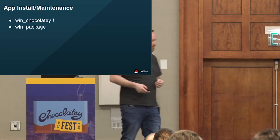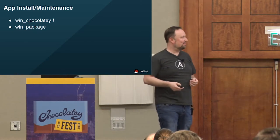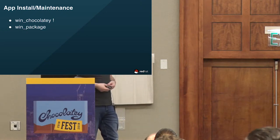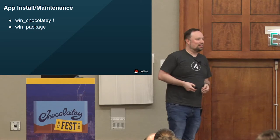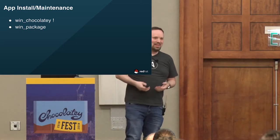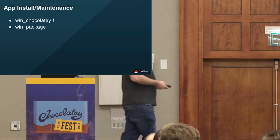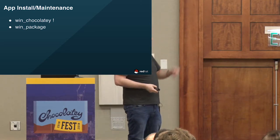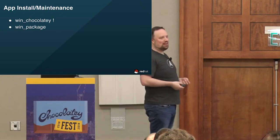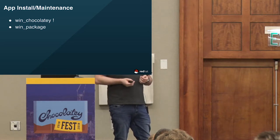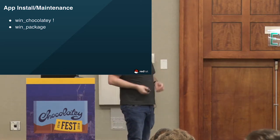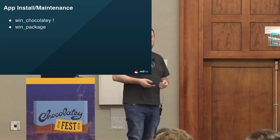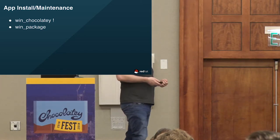The next pain point is app installation and maintenance. win_chocolatey is the Ansible module that takes care of that and gives you that package management experience on Windows. If you need idempotent system management, you really need a package manager. In cases where win_chocolatey doesn't work — if you need to run an EXE or MSI — we also have a win_package module. It tries to be idempotent by checking product codes. For MSIs we can automatically extract the product code; for EXE installers you have to supply it yourself.